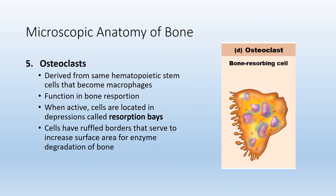The fifth and final type of cell found in osseous tissue is known as an osteoclast. This is a bone cell that is not derived from an osteogenic stem cell — it actually comes from a line of blood cells, similar to macrophages, which utilize phagocytosis to engulf large debris and break it down. Osteoclasts are used in bone resorption, or breaking down bone. At the base of these osteoclasts, they have a ruffled border to secrete enzymes onto bone tissue to break it down, and it also allows for increased surface area.